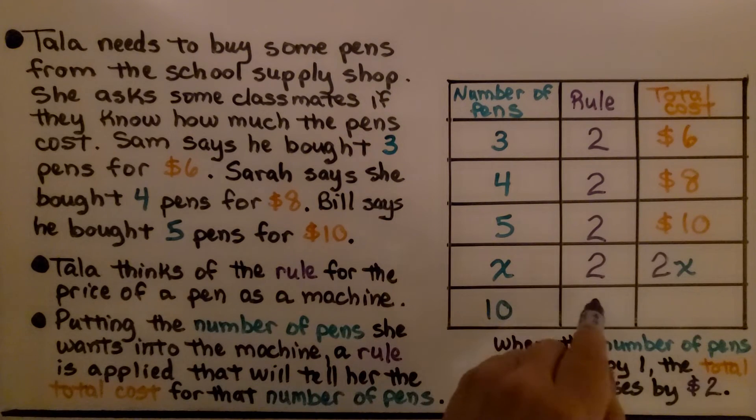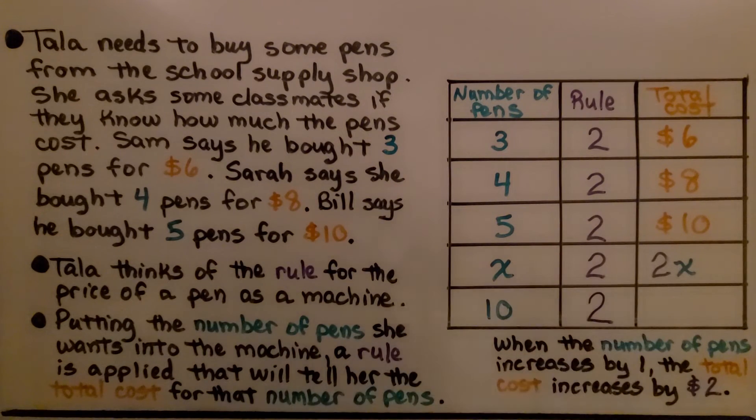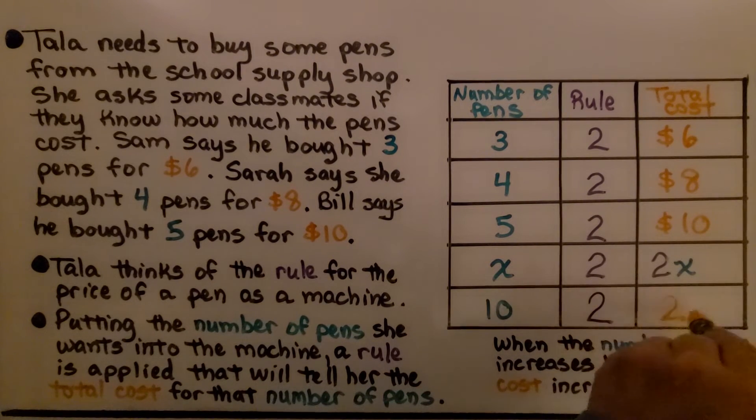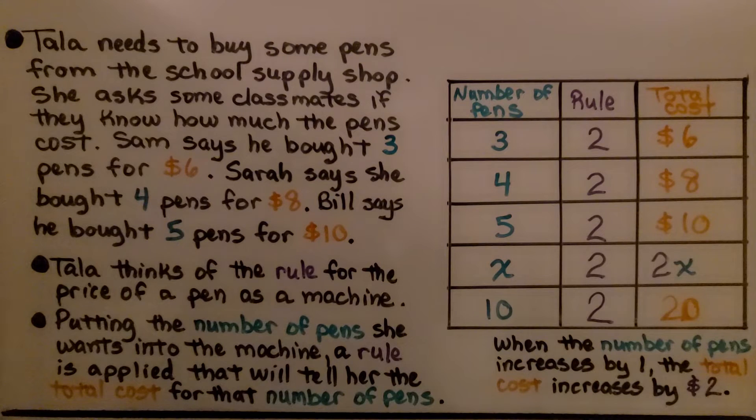If we have 10 pens and we multiply it by 2, we are going to have a total cost of 20. When the number of pens increases by 1, the total cost increases by 2 dollars. The rule is to multiply by 2 dollars.